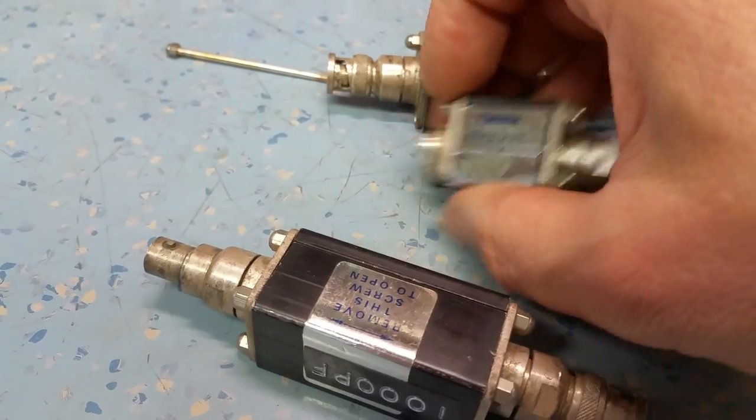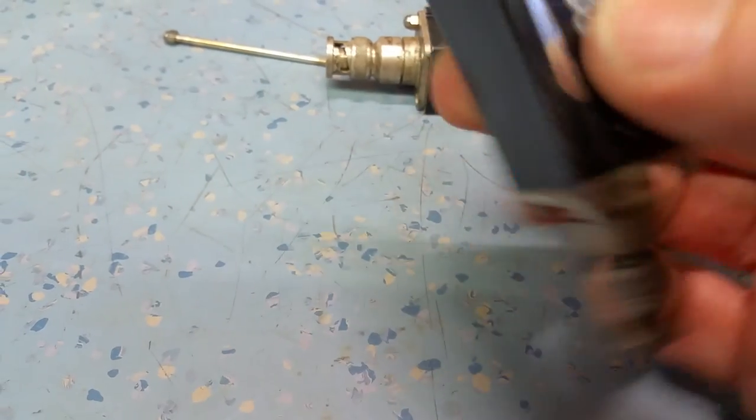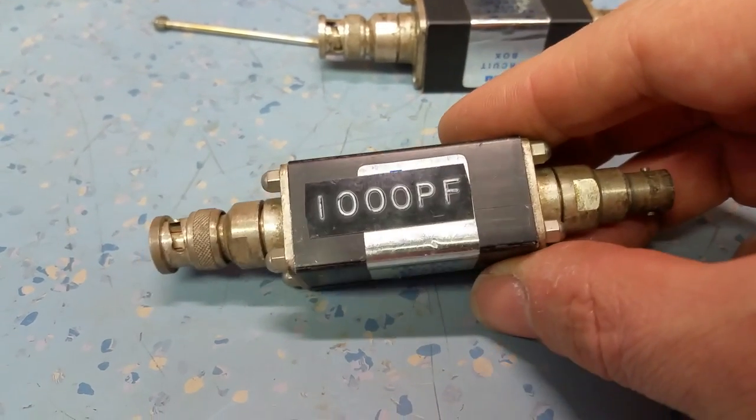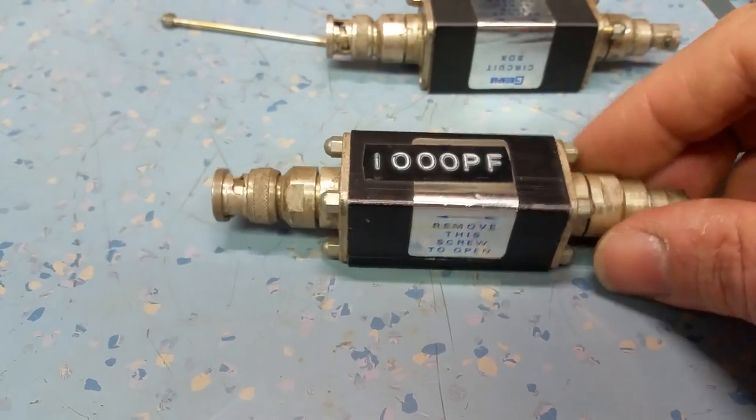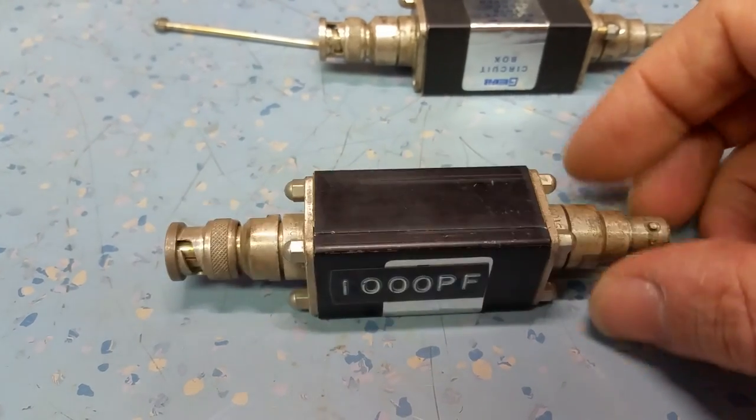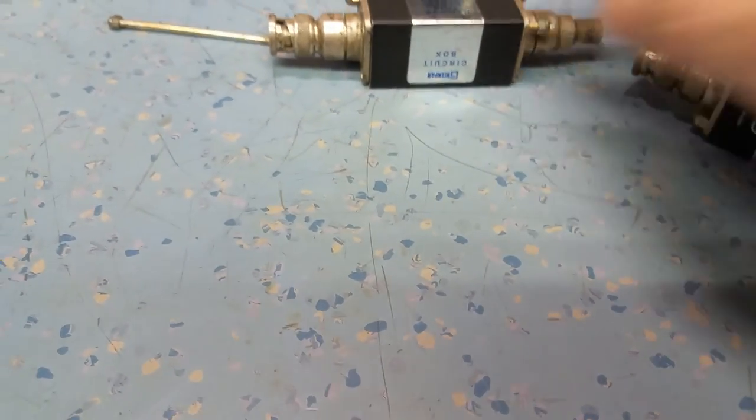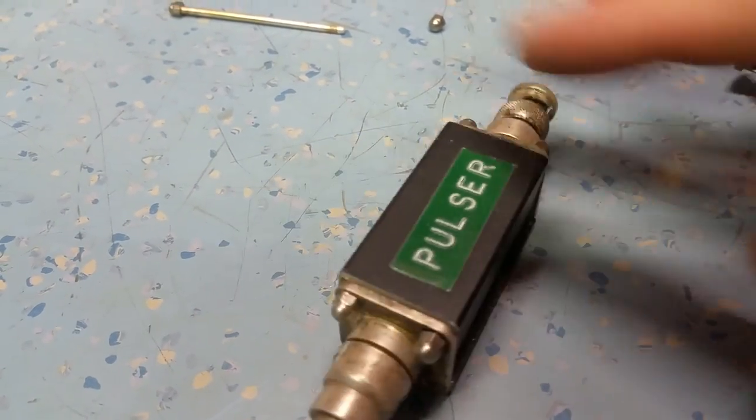So yeah, useful little boxes and things. This one here has obviously just got a 1000 puff capacitor in series with the line, basically DC blocking. Nothing particularly exciting. But this particular one here is a bit more interesting.